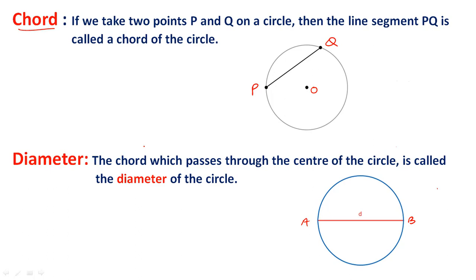What is diameter? The chord which passes through the center of the circle is called the diameter of the circle. Diameter is twice the radius, or we can say radius is half of diameter.